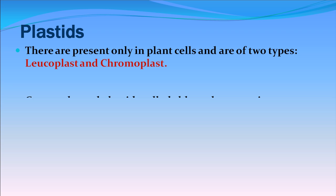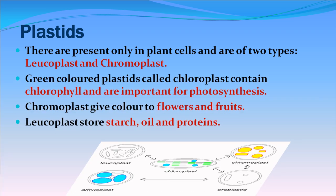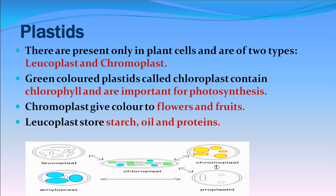Plastids are present only in plant cells and are of two types: leucoplasts and chromoplasts. Green-colored plastids called chloroplasts contain chlorophyll and are important for photosynthesis. Chromoplasts give color to flowers and fruits. Leucoplasts store starch, oil, and proteins.